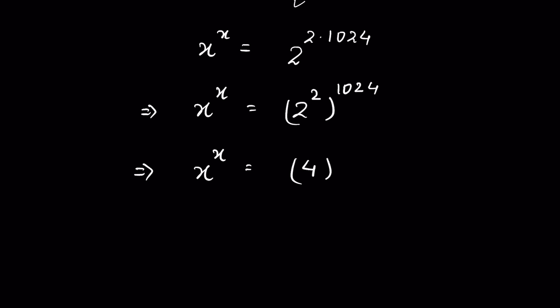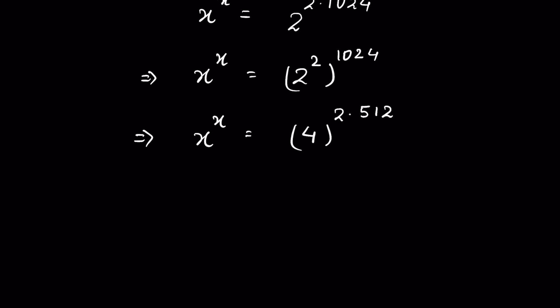Again, 1024 we can write it as 2 times 512. So x to the power x is equal to 4 to the power 2, whole to the power 512, which gives us 16 to the power 512.